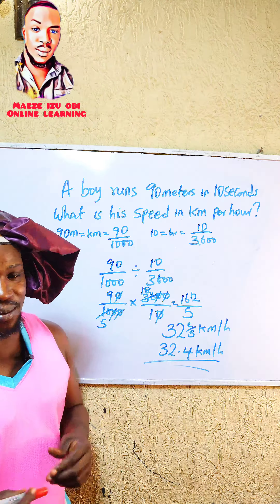So the answer is 32.4 kilometers per hour. Now click the follow button to see us solve more beautiful mathematics like this. See you next time!